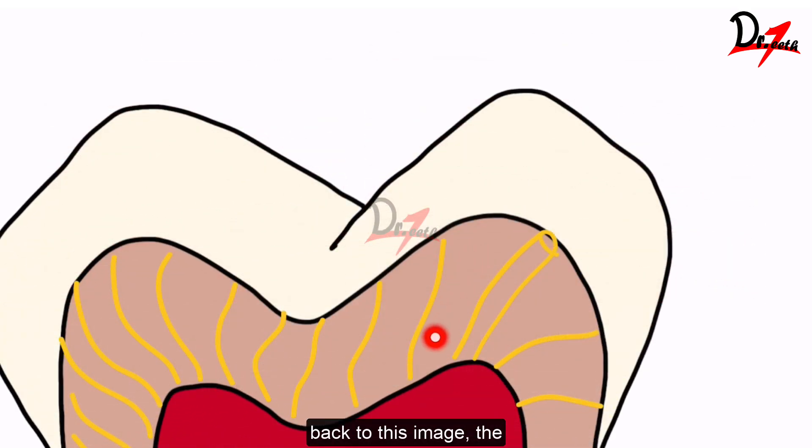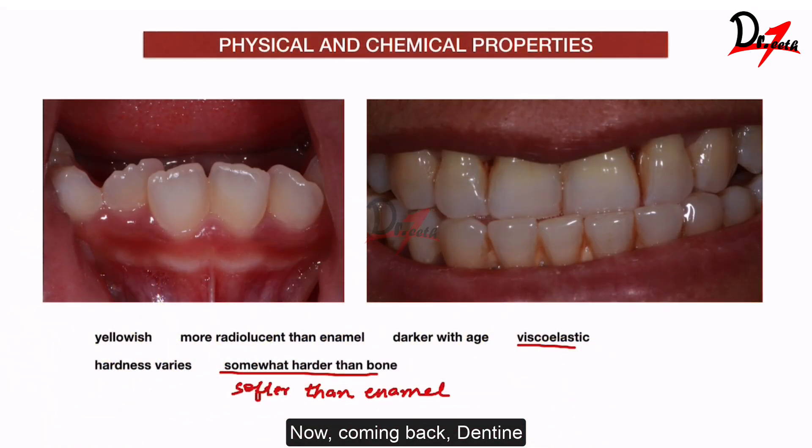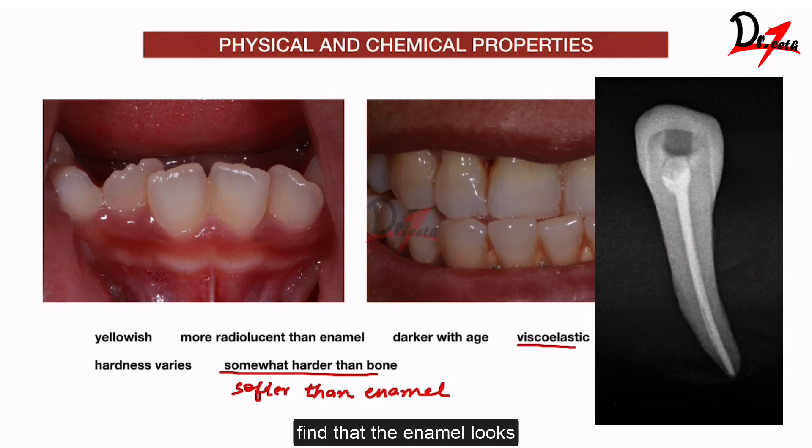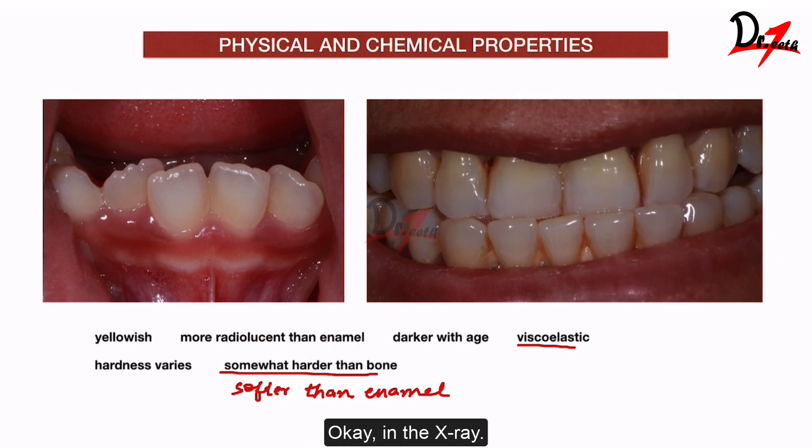The hardness varies even within the dentine. If you come back to this image, the crown dentine and the root dentine hardness will vary. Also, the hardness in the center of the dentine will be more compared to that at the periphery and also at the bottom. Dentine has low mineral salt. It has 65% mineral salt while enamel has around 90% mineral salt. That is why dentine is more radiolucent than enamel. If you take an IOPA of a patient, you will find that the enamel looks very white while the dentine looks a little less white in the x-ray.